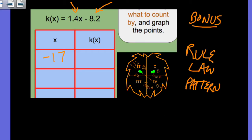So when x is negative 17, k of x is negative 32, an integer value.